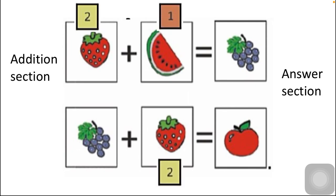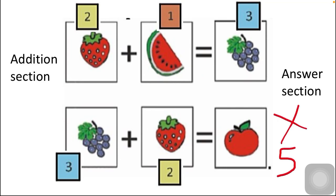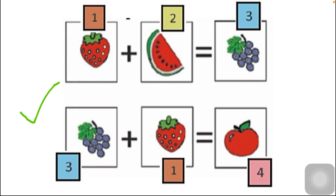For clarification, let us try strawberry equals two. The smallest possible watermelon is then one. Two plus one equals three — grapes equals three. But the second equation gives three plus two equals five, which is wrong because we only have numbers one to four on the cards. This confirms that the trick of assigning the smallest numbers to the addition side is the correct approach.